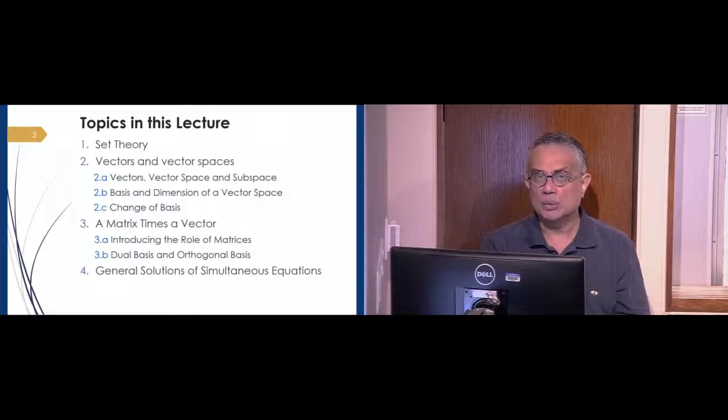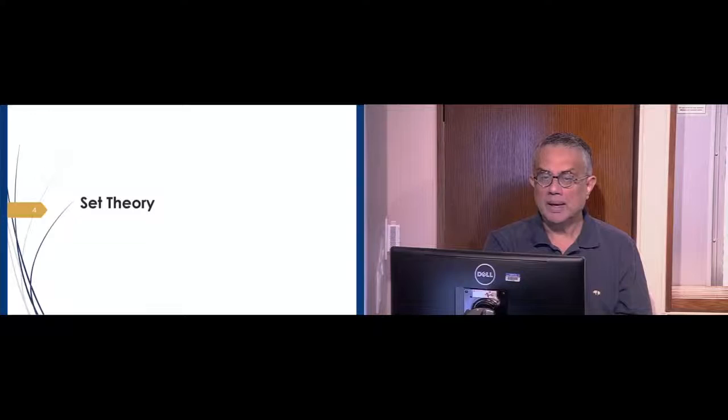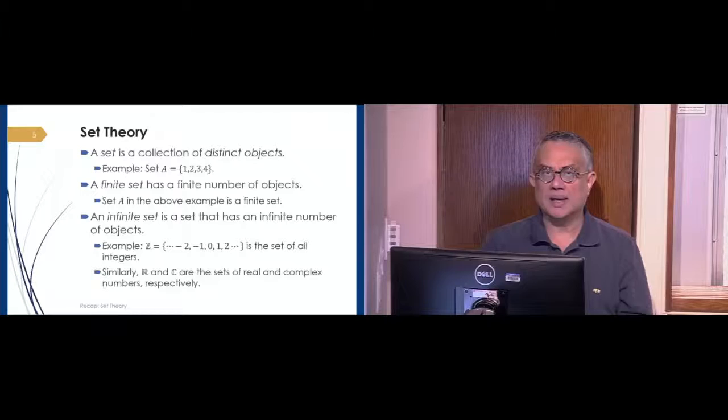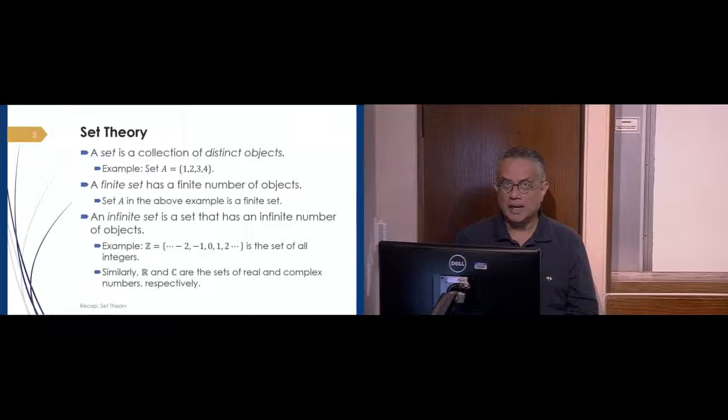Let's start with some very basic concepts about set theory, topic number one. A set is nothing but a basic collection of objects. Numbers one through four form a set, and since that's a limited or bounded number of elements, it's called a finite set. You could also have infinite sets. The set of all integers, which could be negative or positive, form an infinite set because there is no limit.